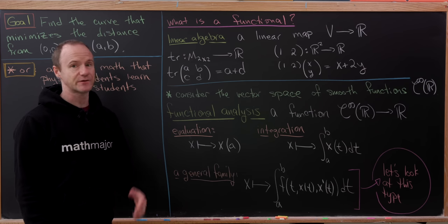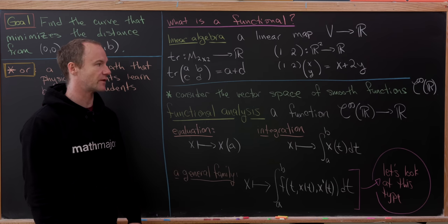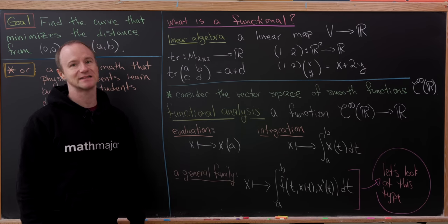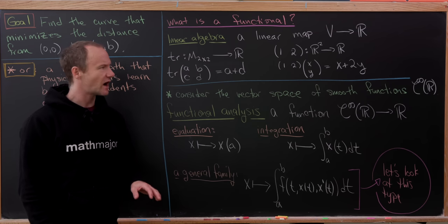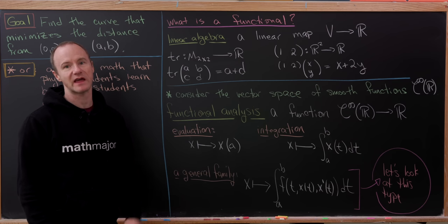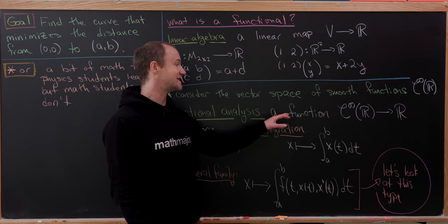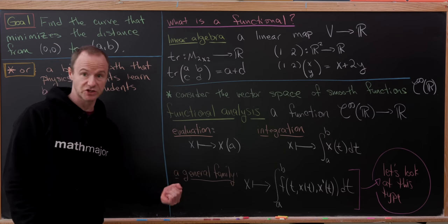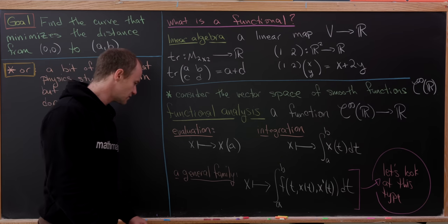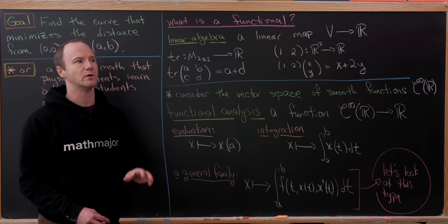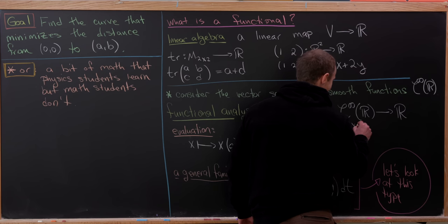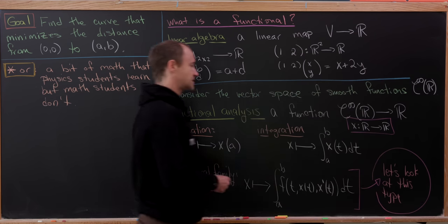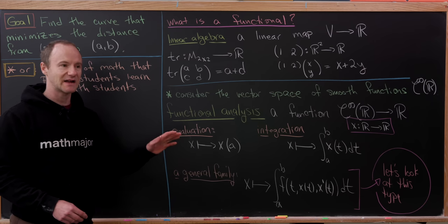Now we want to look at a different type of vector space: the vector space of smooth functions on the real numbers, sometimes called C∞(R). We want to look at the functional analysis idea of a functional. This often doesn't require linearity, so we just need a function from C∞(R) to R — in other words, the inputs are functions and the outputs are numbers. We'll use the notation where x is the function, taking in numbers and outputting numbers, and we want to somehow assign that function to a number.